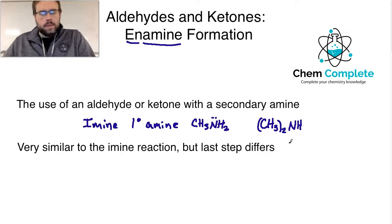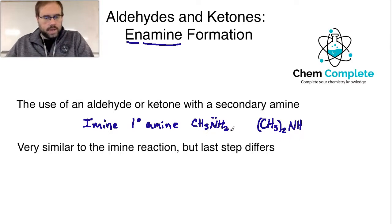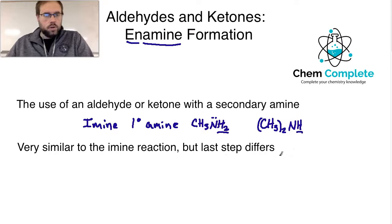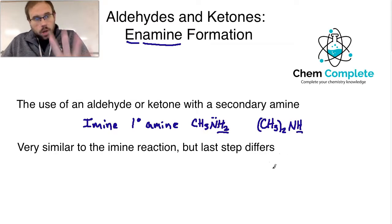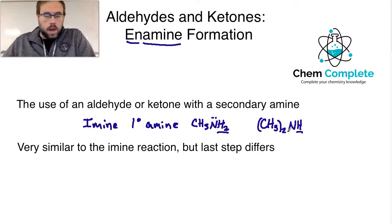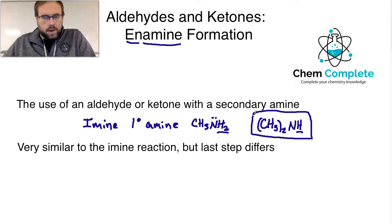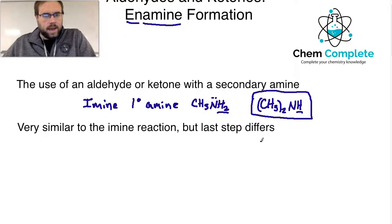A lot of times if students are trying to determine whether these are primary or secondary, I usually say look at the hydrogen count: if there's two hydrogens, it's a primary; if there's one, it's a secondary. You could also have tertiaries, even though we're not talking about that in this video — that hydrogen replaced with another R group. So we're going to be focused on the secondary amine reacting with an aldehyde or ketone.